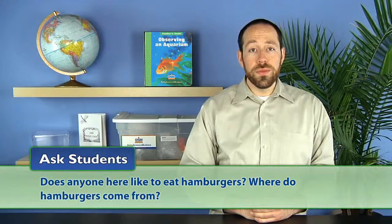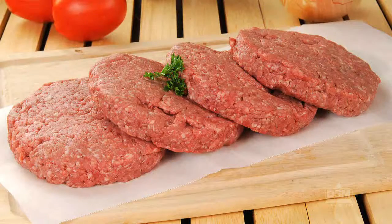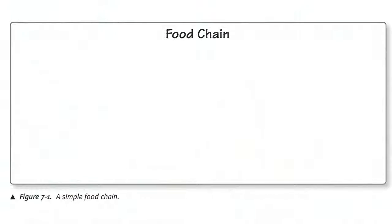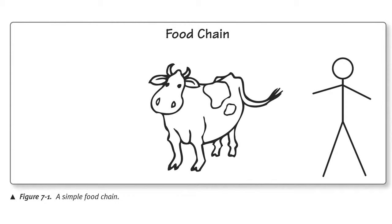Where do hamburgers come from? Some students may say the store. Explain that hamburger is made of meat that comes from cows. Begin a food chain diagram with the class. Start by drawing a stick figure of a person. To the left of the person, draw a picture of a cow.